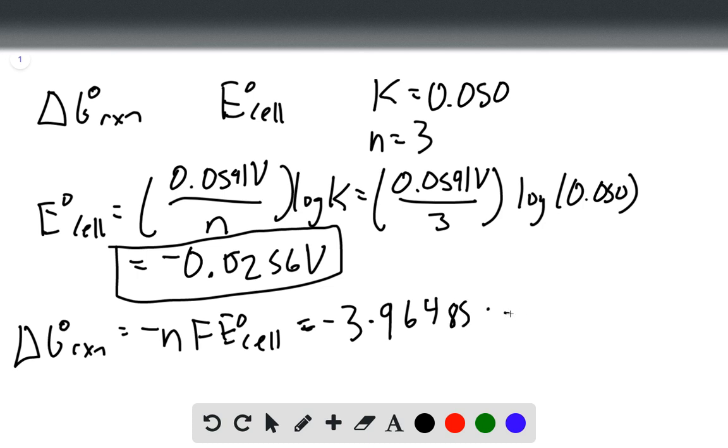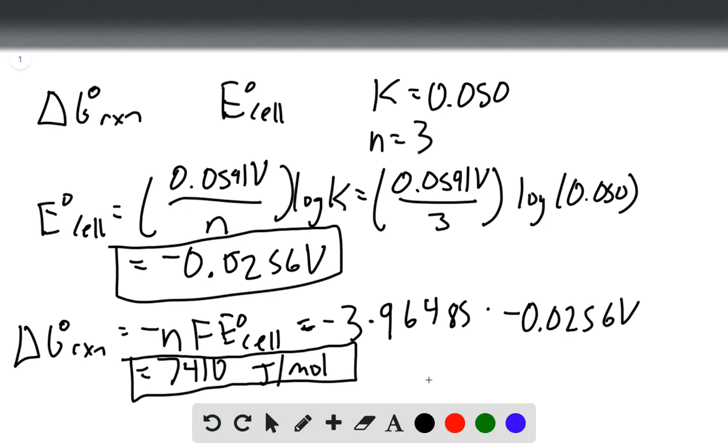Then we multiply that by our E cell that we just got, negative 0.0256 volts. That gives us a delta G of reaction of 7,410 joules per mole. Those are our answers for delta G of reaction and E cell.